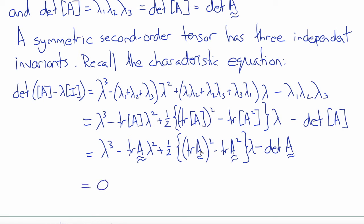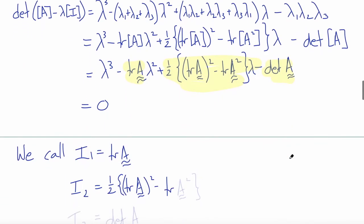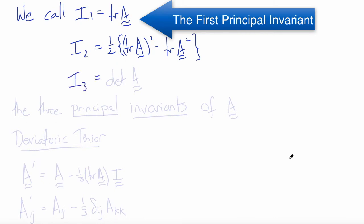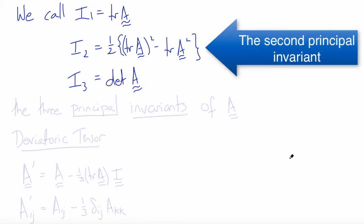The coefficients of the characteristic equation are called the principal invariants. The trace of A is called the first principal invariant, I1. The second coefficient, one-half of [(trace of A) squared minus trace of A squared], is called I2, the second principal invariant. And the determinant of A is called I3, the third principal invariant.